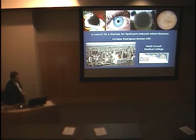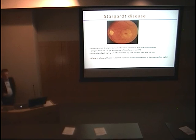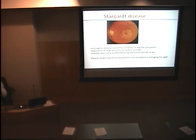This is Weill Cornell Medical College, Rockefeller University, the East River, Sloan Kettering, Central Park — this is where I work. Stargardt disease is a monogenic disease usually caused by mutations in the ABCA4 transporter. There are large amounts of lipofuscin deposited in the RPE, causing macular dystrophy and blindness by about the fourth decade of life. This disease is a clear example that lipofuscin is bad for the eye.